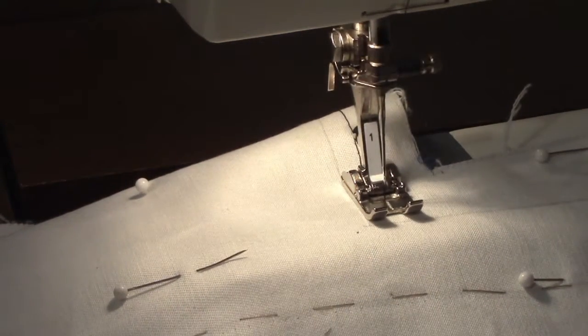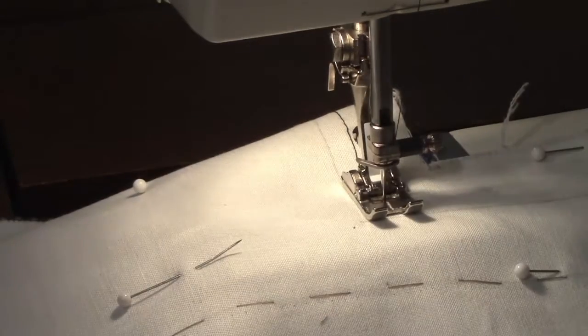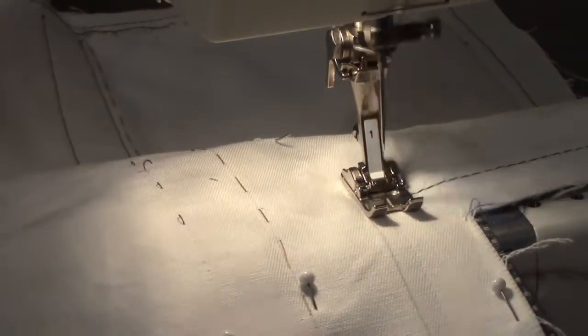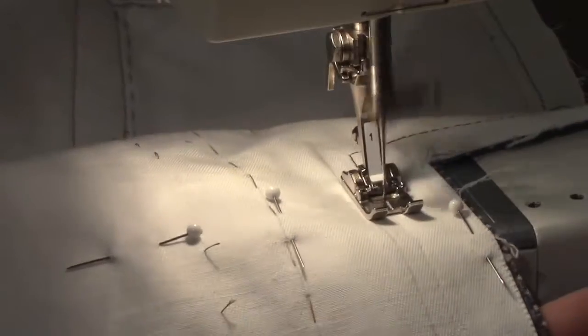When you reach a quarter inch from that corner, use the hand crank to place the needle down, lift the presser foot, and turn your fabric. Line up the edge of the presser foot with the next line. Put the presser foot down and continue sewing until you reach the next corner.